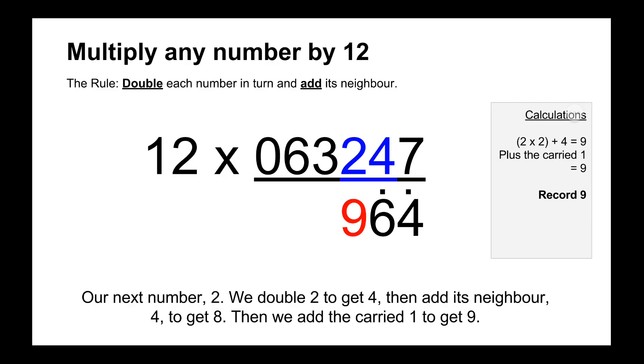And then we go across to the left which is a 2 and we do 2 times 2 equals 4 plus its neighbour which is 4. So 4 plus 4 is 8 plus the dot on top of the 6 to represent the carry 10 is 9.